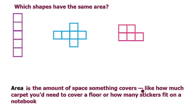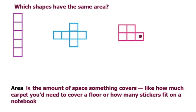Area is like how much carpet you'd need to cover a floor, or how many stickers fit on a notebook. So you can imagine how many stickers might fit on these little blocks, and on these ones, and on these ones. When you look at it that way you can kind of see that there are two shapes here where the same amount of stickers would cover that area.